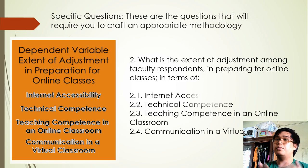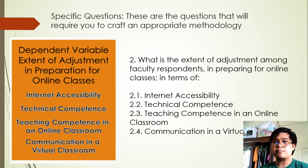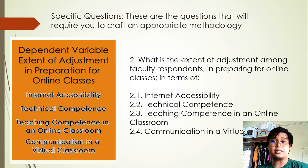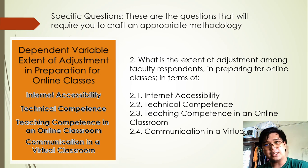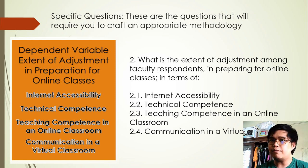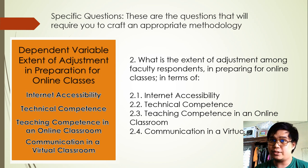Question number two will be box number two, the dependent variable box. The question will be: What is the extent of adjustment among faculty respondents in preparing for online classes in terms of — according to Ogburn's — internet accessibility, technical competence, teaching competence in an online classroom, and communication in a virtual classroom? Question number two is box number two, and this is all about the dependent variable of the study.